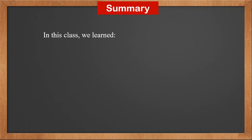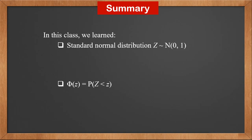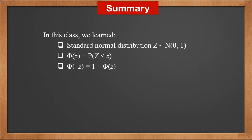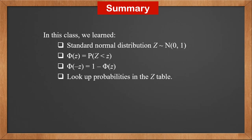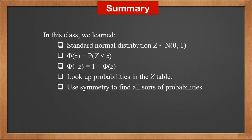In this class, we learned: standard normal distribution Z is N(0, 1). Phi(z) is P(Z < z). Phi(-z) is 1 - phi(z). We look up probabilities in the z-table, and use symmetry to find all sorts of probabilities. The equal sign has no effect and can be ignored.